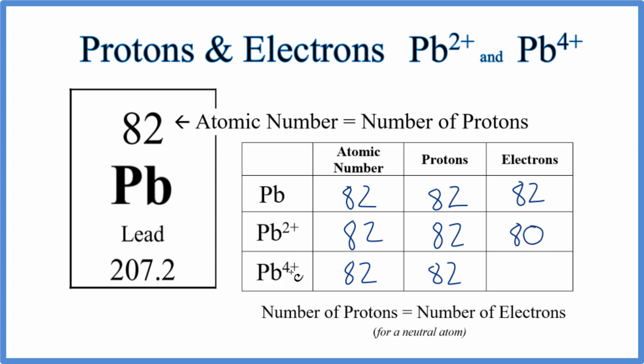For Pb⁴⁺, we lost four electrons. 82 minus 4 gives us 78.